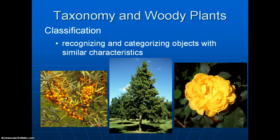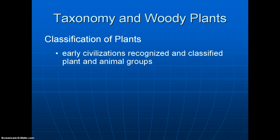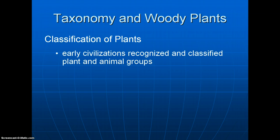Classifying things really just means that you look around and you recognize characteristics of certain groups in common. You look at objects and find that they have similar characteristics — that's the basis of classification. When it comes to classifying plants, it was noted that early civilizations were already doing this quite a bit. They were starting to recognize groups of plants that they could eat, or certain plants that were poisonous so they had to avoid them.